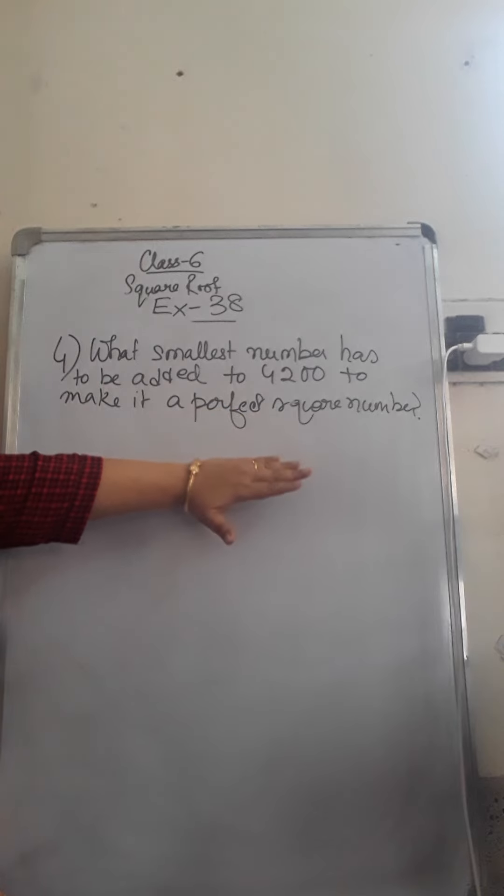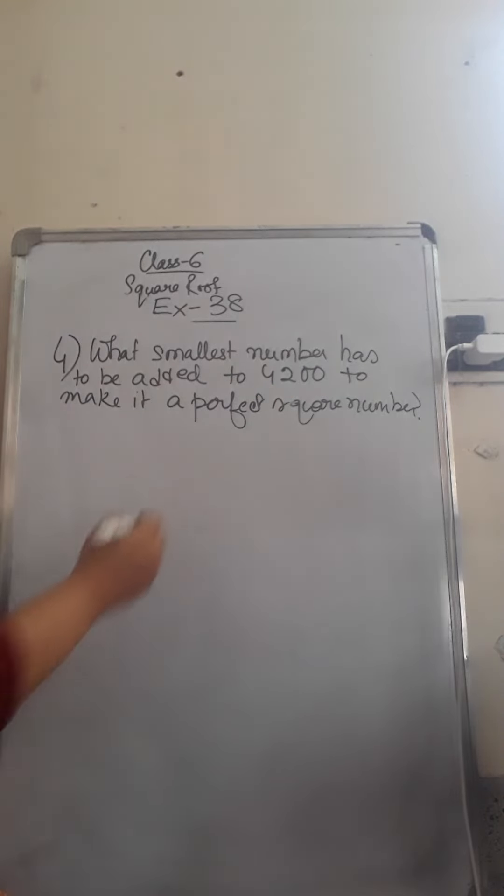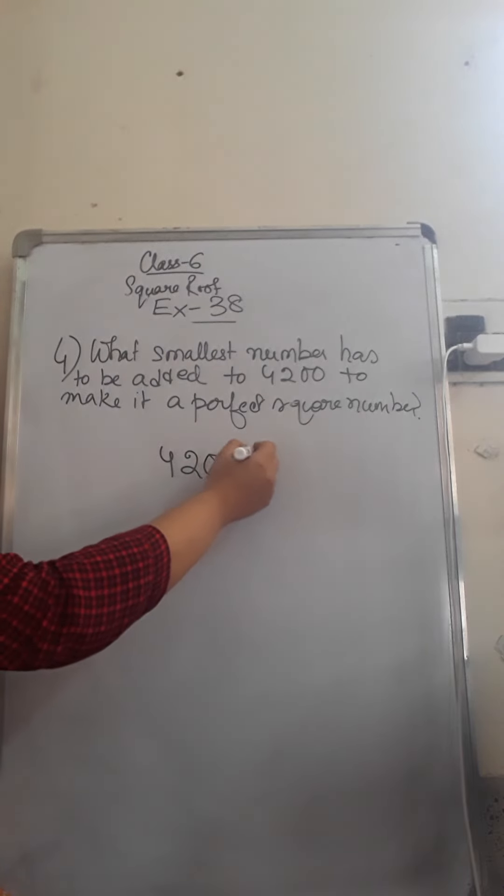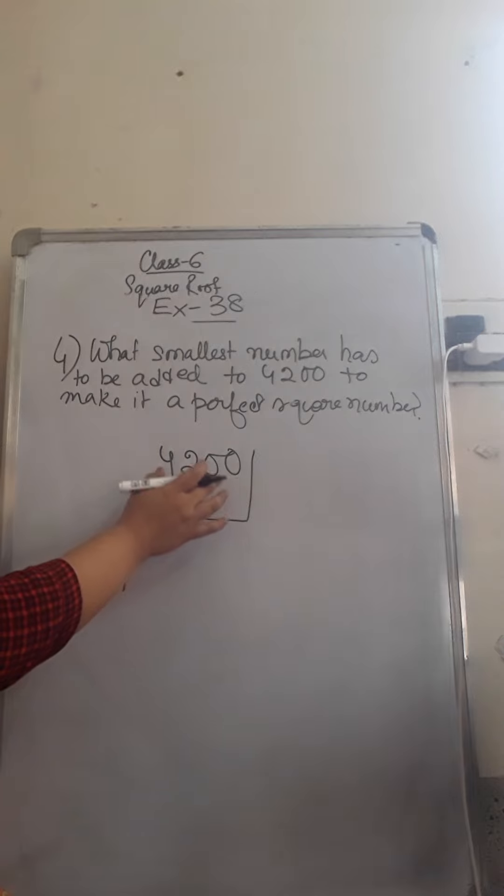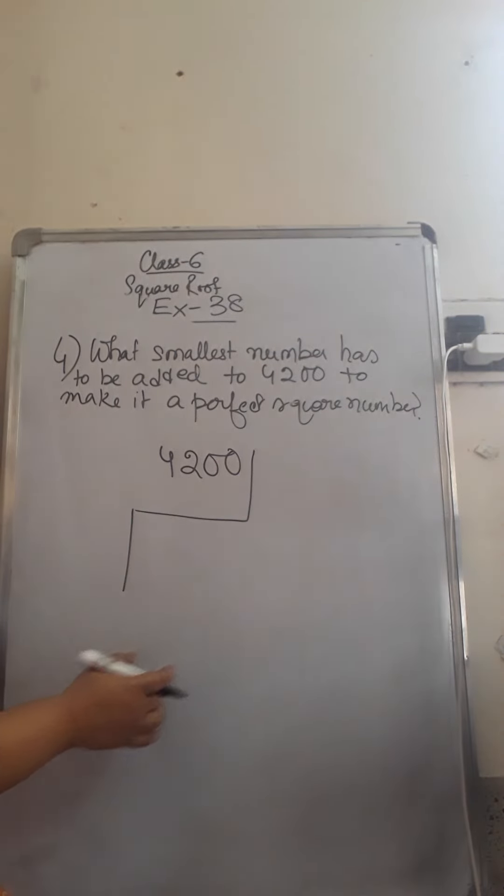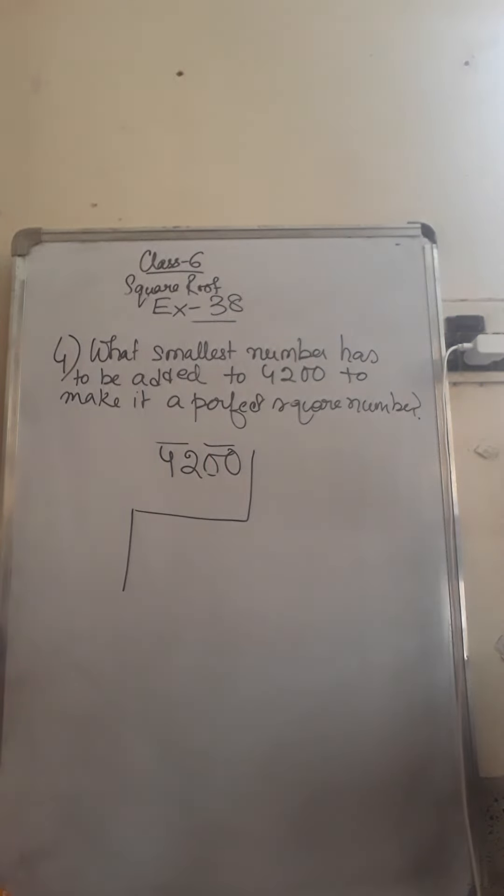So from this we know that the given number is not a perfect square. That's why we need to add or subtract something to make it a perfect square. So if we find the square root of the given number, since it is not a perfect square, there will be remainder. When any number given is not a perfect square, we get a remainder. So first we will try to find out the square root and see what is the remainder.